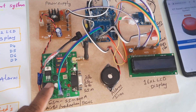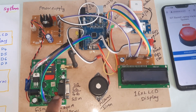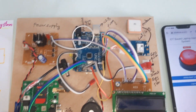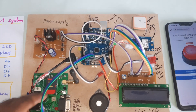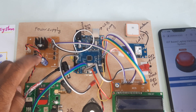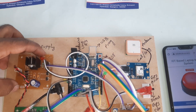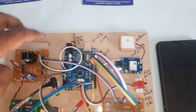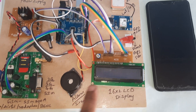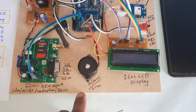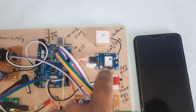The components include: rectifier, filter capacitor, 7805 regulator, one LED power supply board, GSM SIM 800A, rectifier, filter capacitor, 7805 regulator, one LED power supply board, Arduino Uno R3, 16x2 LCD display, alarm siren, and GPS module.